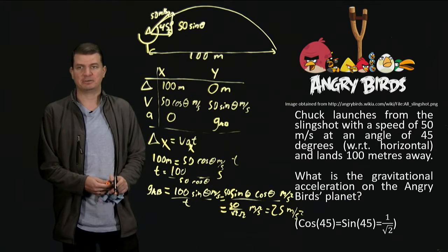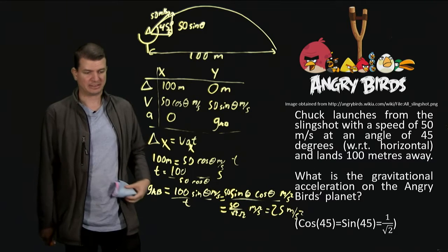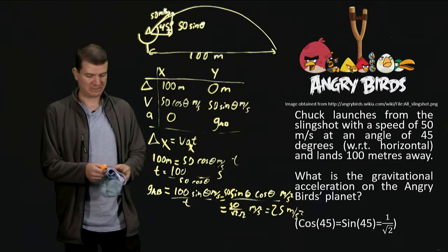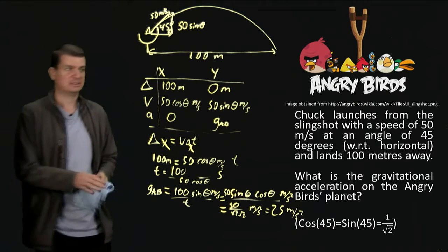All right. So now we've found the gravitational acceleration with Chuck's help. And now we know exactly the sort of rocket thrust that we'll need in order to, say, break orbit of the strange Angry Birds planet.